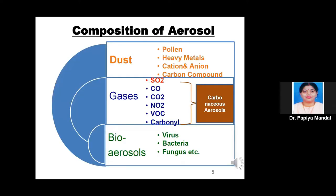Based on size or composition, aerosols can be classified as dust, gases, and bioaerosol. Dust includes components like pollen, heavy metals, cations and anions, and carbon compounds. Gases can be sulfur dioxide, carbon monoxide, carbon dioxide, nitrogen dioxide, volatile organic compounds, and carbonyls. Bioaerosol consists of virus, bacteria, fungus, etc. Other than sulfur dioxide, all compounds like carbon monoxide, carbon dioxide, nitrogen dioxide, volatile organic compounds, and carbonyls have the tendency to form carbonaceous aerosols.